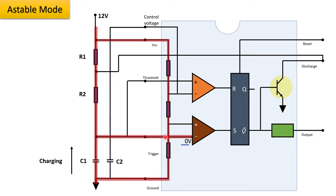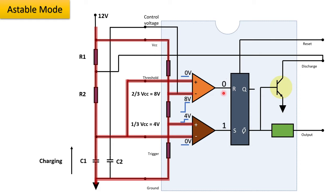During the charging phase, the voltage at the negative terminal of the trigger comparator is less than the positive terminal Vcc, giving output 1 from the trigger comparator. The same voltage is given to the positive terminal of the threshold comparator, which is less than 2/3 Vcc, resulting in 0 output. This 1 and 0 input to the flip-flop results in 1 and 0 output. Q-bar at 0 results in high output at IC555.